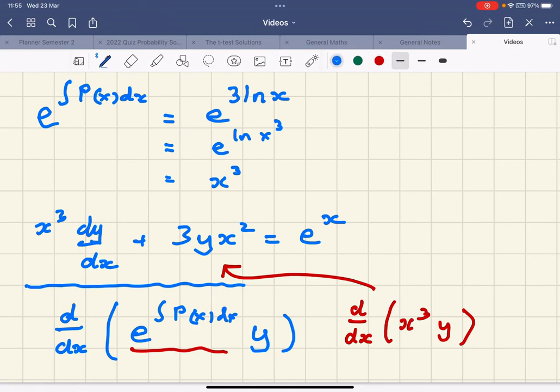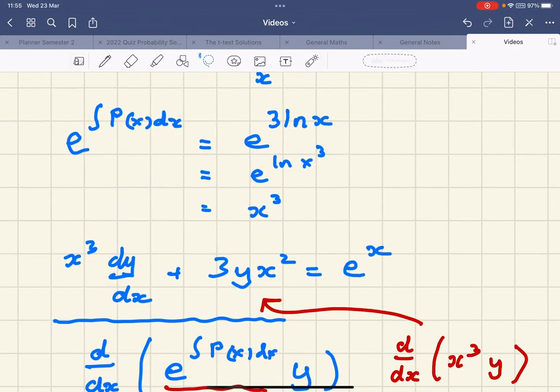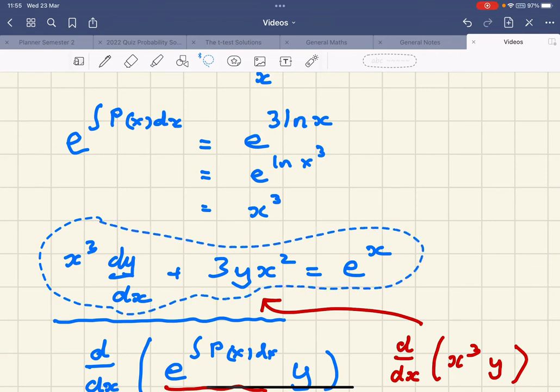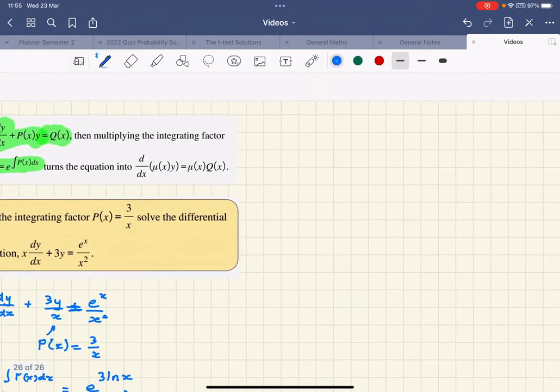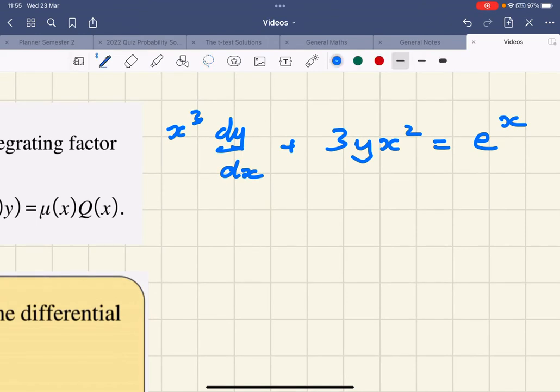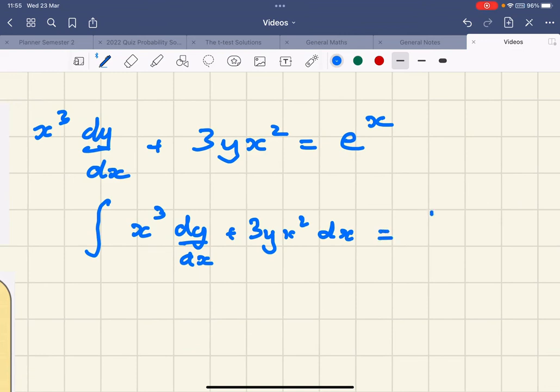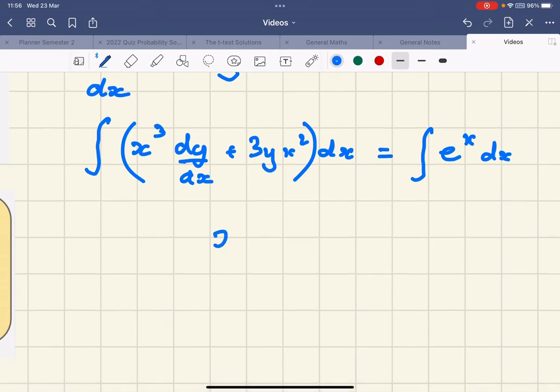So what that means is if I take that expression and I integrate both sides—so if I integrate all of this, which looks really complicated, but I actually know the answer to that, and I integrate the other side as well—well, this will integrate to give me x³y.